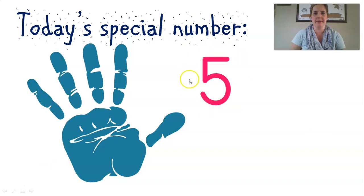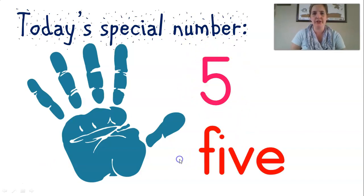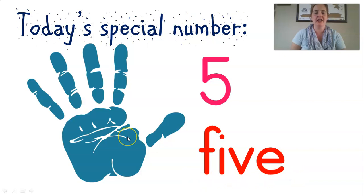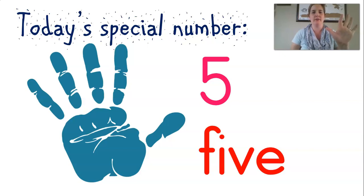We call this a number symbol. And if you want the number name — the word — that's how you read it: five. So we've got the number symbol over here, the number name, the word for the number, and actually we've got a hand up here which shows how much the number is. Why don't you hold up your hand and see — you've got five fingers. That's how much is in the number five.